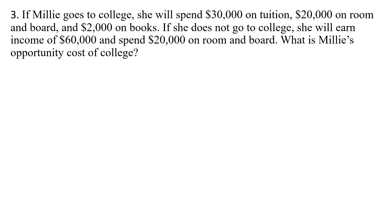Question 3. If Millie goes to college, she will spend $30,000 on tuition, $20,000 on room and board, and $2,000 on books. If she does not go to college, she will earn income of $60,000 and spend $20,000 on room and board. What is Millie's opportunity cost of college?